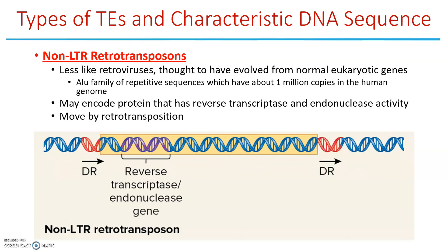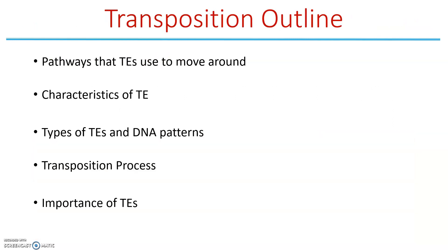Then we have non-LTR retrotransposons, which are thought to originate from normal eukaryotic genes. An example is the ALU family of repetitive sequences in humans — up to about 1 million copies in the human genome. These encode reverse transcriptase plus an endonuclease combined. They have direct repeats, then the transposon sequence encoding reverse transcriptase and endonuclease, without additional flanking sequences. Those are our four types: insertion element, simple transposon, LTR retrotransposon, and non-LTR retrotransposon.